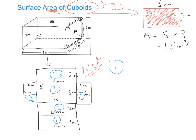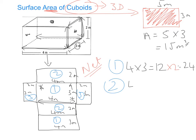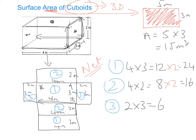Rectangle number 1 has length 4 and width 3, so that's 4 multiplied by 3, which gives 12. There are 2 of them, so multiplied by 2 gives 24. Rectangle number 2 is 4 multiplied by 2, giving 8 — times by 2 gives 16. And rectangle number 3 is 2 multiplied by 3, giving 6 metres squared — times by 2 gives 12.